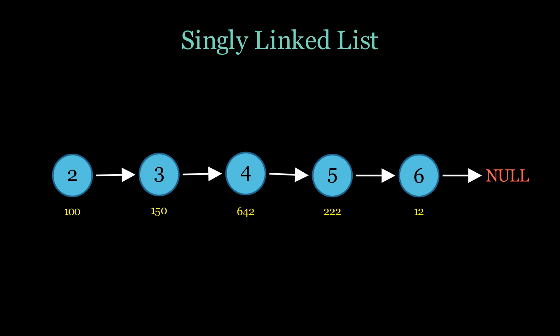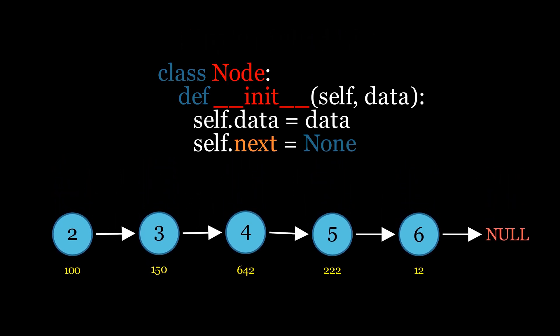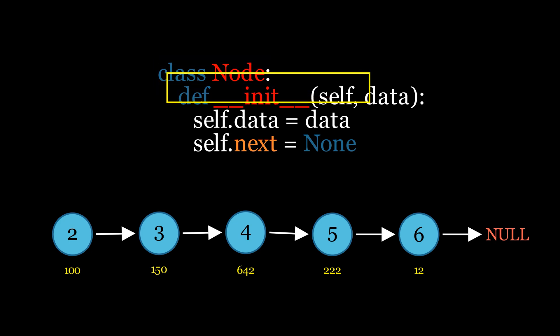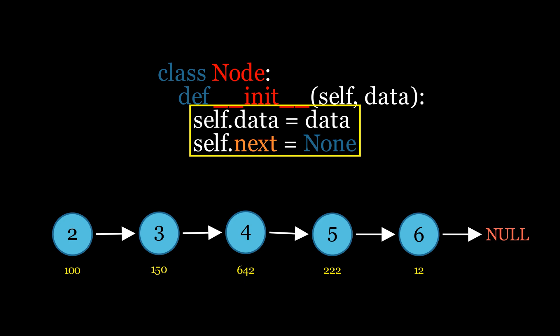Now let's see the implementation of the linked list and the operations on it along with visual animations. We will use Python for this because it is an easy and beginner-friendly language. First we will define a class called Node. In the constructor we will take data as input and initialize two members: data and the next pointer, which will be initially set to None. This structure allows us to create individual nodes that can be linked together to form our linked list.